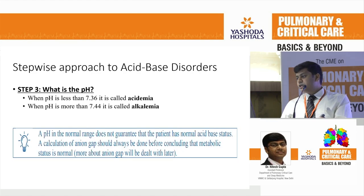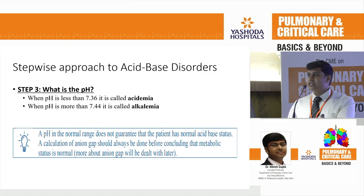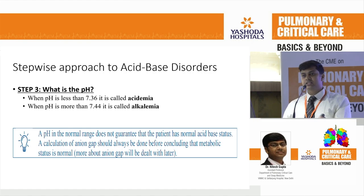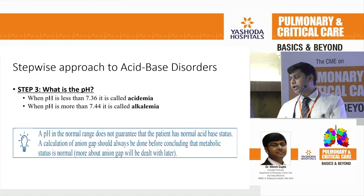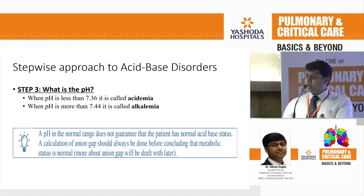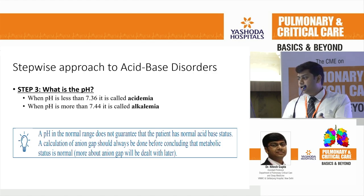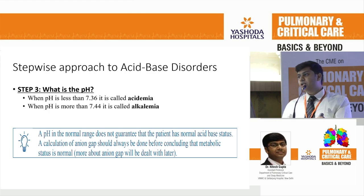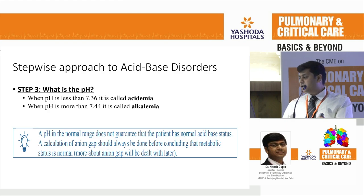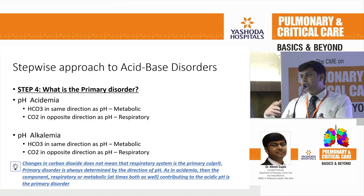The evaluation begins with pH. If it is less than 7.36, we call it acidemia; if more than 7.44, we call it alkalemia. However, a pH in the normal range does not guarantee the patient has normal acid-base balance. A calculation of anion gap must always be done before concluding that metabolic status is normal. Practically, you have to go through all steps regardless of the pH in your ABG.